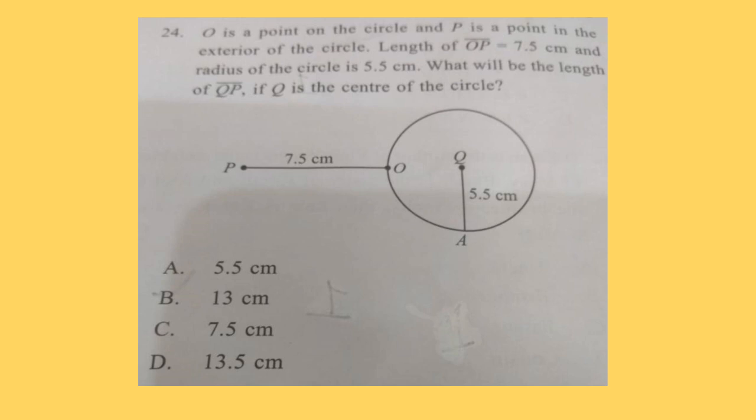Question 24: O is a point on the circle and P is a point in the exterior of the circle. Length of OP is equal to 7.5 centimeters and radius of the circle is 5.5 centimeters. What will be the length of QP if Q is the center of the circle? Now radius of the circle and OP length is given, so you have to find out the length QP. Correct answer will be option B, 13 centimeters.